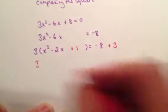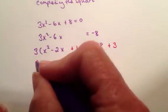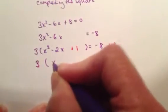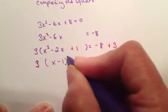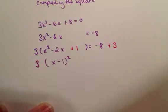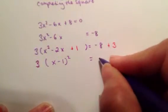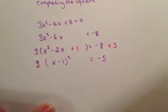Now, if you remember your factoring rules, that 3 is still outside. This trinomial inside factors nicely into x minus 1 times x minus 1, which is x minus 1 squared. Review your rules of factoring if you need a little help on that. And that's negative 5.